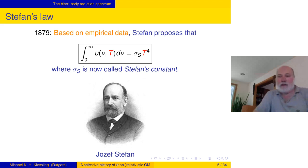Here's the first very important signpost in 1879. Based on the empirical data, Josef Stefan proposed that the integrated amount of energy per unit of time, per unit of solid angle, per unit of area, but no longer per unit frequency because he integrates all the frequencies, that this is a constant times the fourth power of the temperature. That's called Stefan's law, and the constant is nowadays called Stefan's constant, and was an empirical constant at the time.